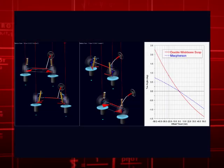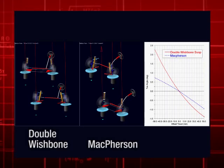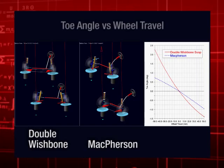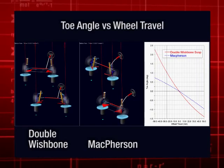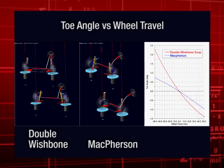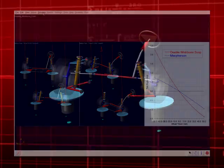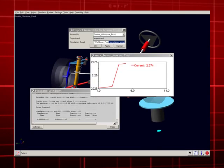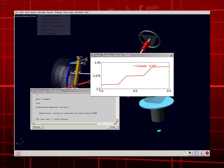At the start of a vehicle program, ADAMS Car helps the engineer analyze different suspension configurations first. For example, the engineer can compare metrics between, say, a double wishbone and a McPherson strut-type front suspension. Once a particular choice meets initial metrics, a detailed design optimization for bushings and hardpoint locations is carried out.